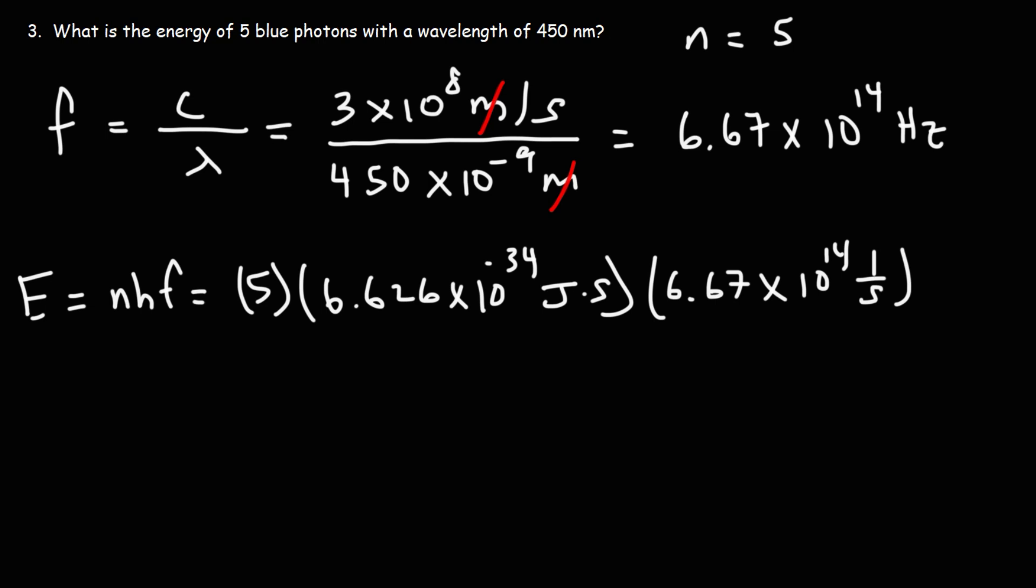And we have a frequency of this value. So 6.67 times 10 to the 14 times Planck's constant times 5 will give us this answer. So the energy of the 5 blue photons combined is going to be 2.21 times 10 to the negative 18 joules.